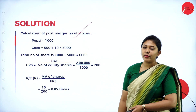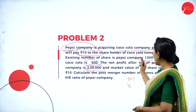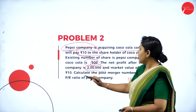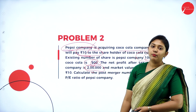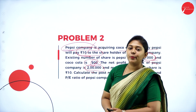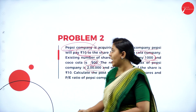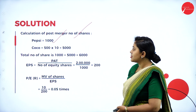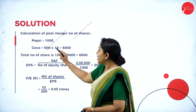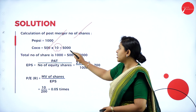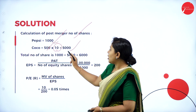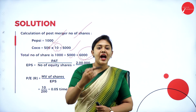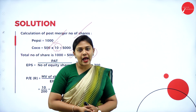Calculation of post-merger number of shares: Pepsi company has 1,000 shares. Coca-Cola has 500 shares, and the market price per share is 10 rupees. So Coca-Cola: 500 shares into 10 rupees equals 5,000. Total number of shares: 1,000 plus 5,000 equals 6,000 shares after the merger.